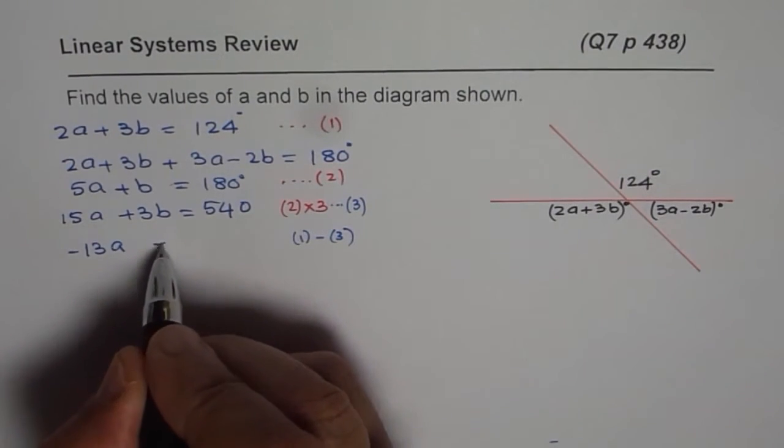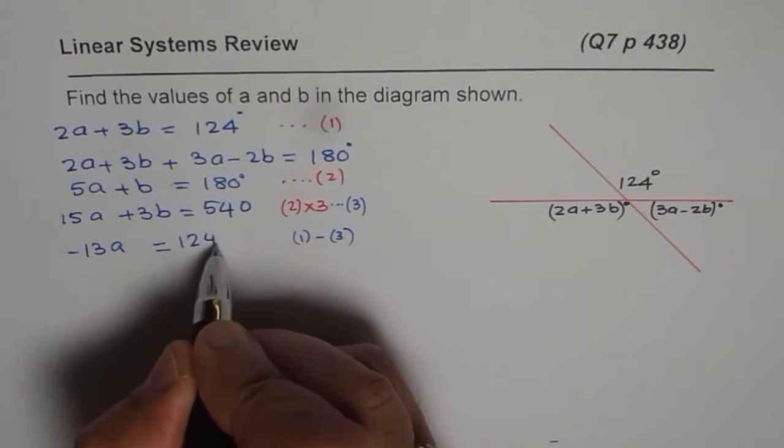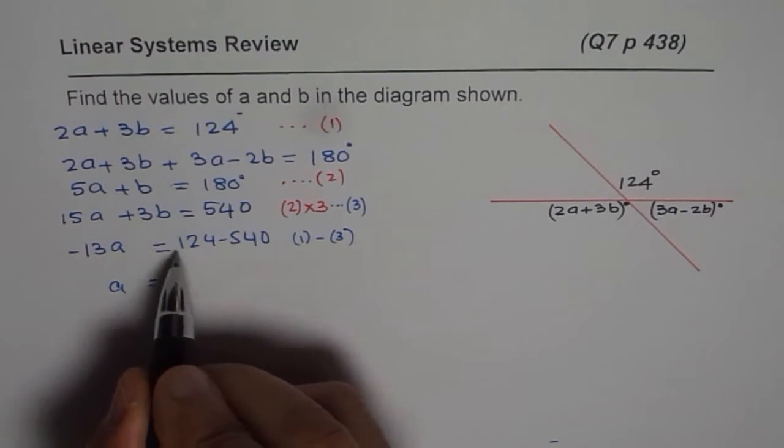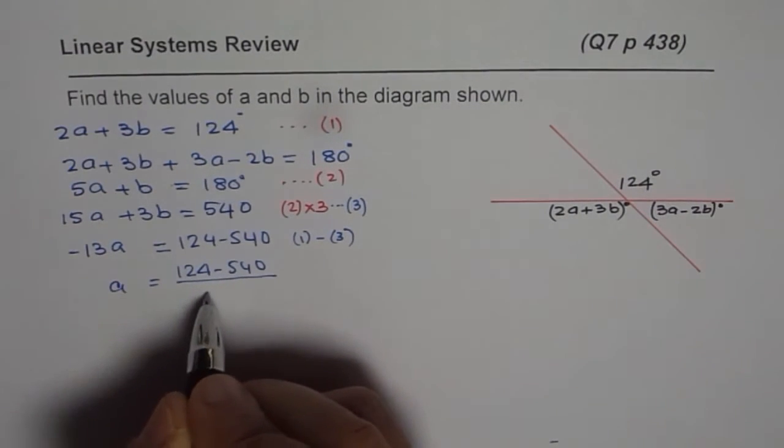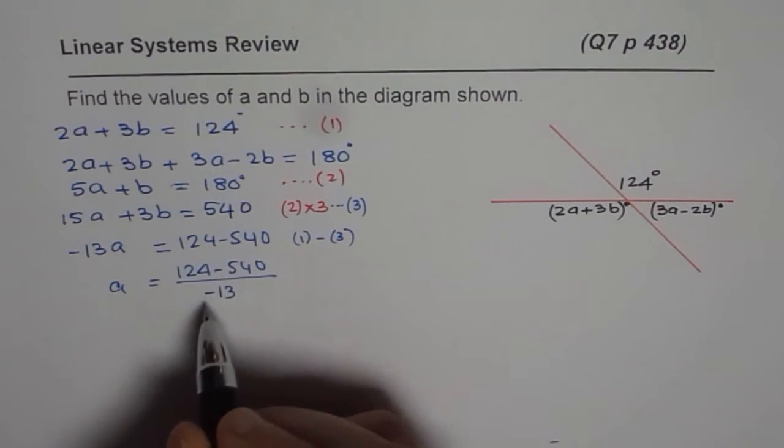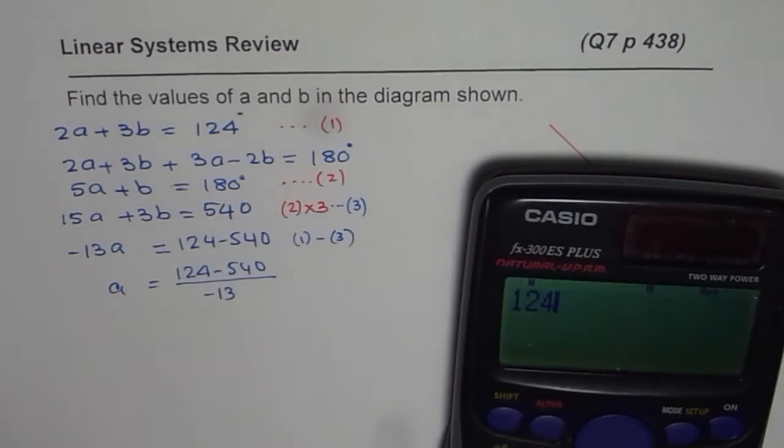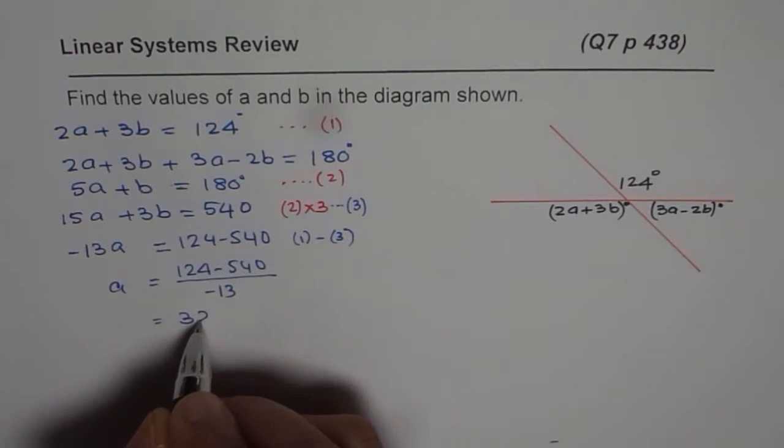And 124 minus 540, let me write 124 minus 540 for the time being. So A is equal to 124 minus 540 divided by minus 13. Ultimately we get a positive value. So we have 124 minus 540 divided by 13, but I will write down a positive answer, which is 32. So we will write this as positive 32. So we get A as 32.